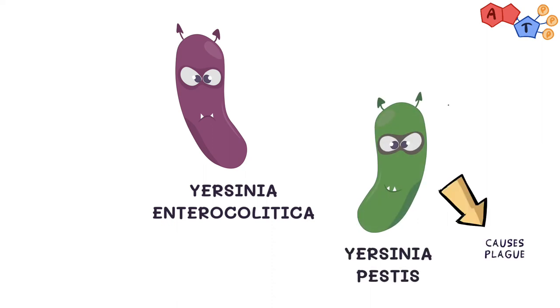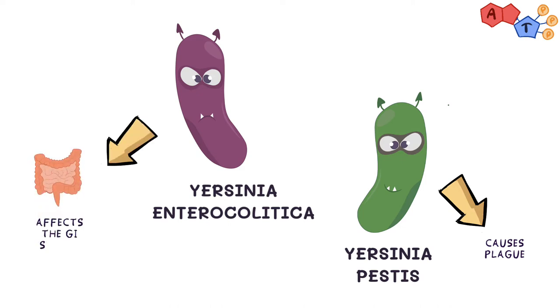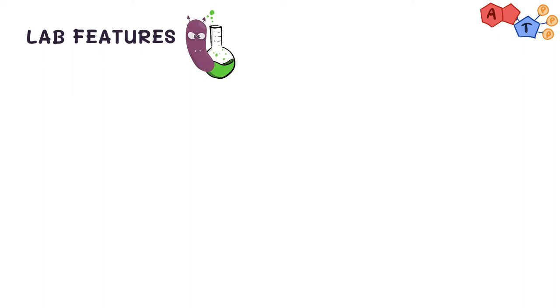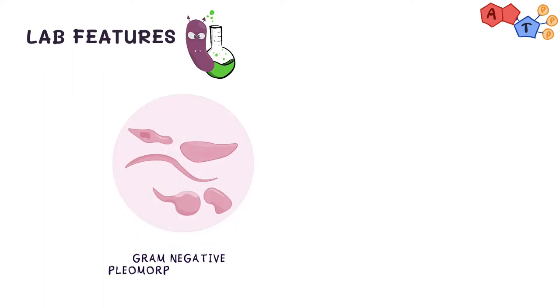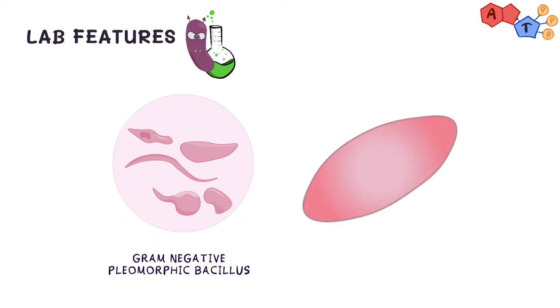Yersinia enterocolitica — you can tell from the name itself that it affects the GI system. It is a gram-negative pleomorphic bacillus. It tends to retain stain at the ends, a feature called bipolar staining.